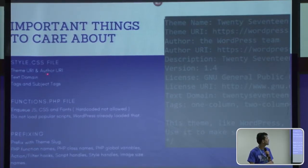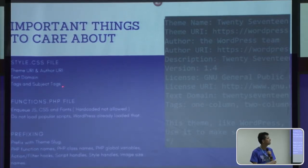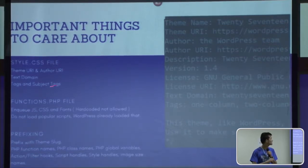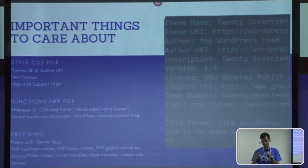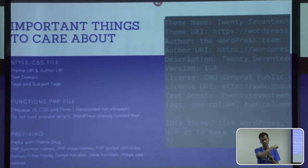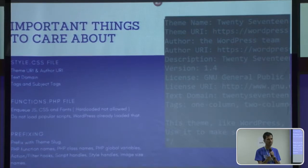Theme URI and author URI — you need to mention that these are optional. For author URI, you can write your own blog or website URI. Text domain I already discussed. Tags and subject tags you need to check — subject tags are not allowed more than three but at least one. Subject tags are like blog, food and drinks, photography, and similar. You need to check those subject tags in the theme handbook page — just Google 'theme handbook' and you will get the results.